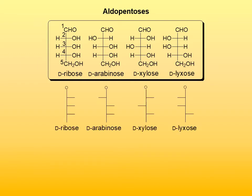In a stick formula, we have a head that represents the aldehyde functional group — that head means CHO. The chain of carbon atoms is shown as a straight line, and hydroxyl groups are represented as solid lines pointing to the left or right, depending on their position in the Fischer projection. The last point is the CH2OH group. Wherever a horizontal line meets the vertical line there is a carbon atom, and on the other side is a hydrogen atom. The four aldopentoses represented as Fischer projections at the top are shown below as stick formulas.